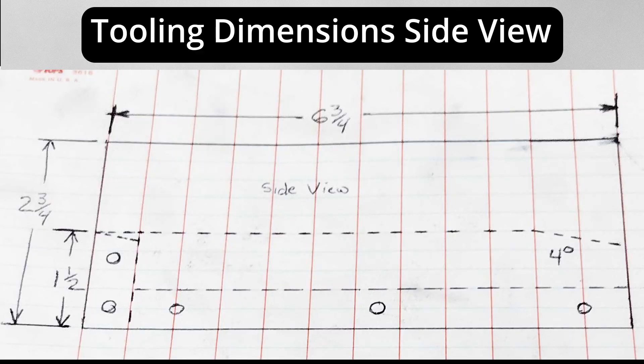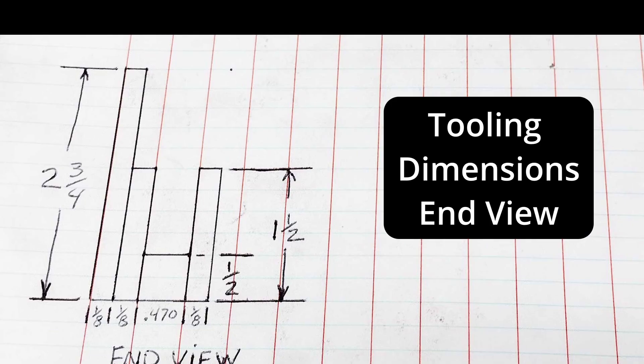Once you determine the desired orientation of the part when it discharges from the bowl, chart out the dimensions of the tooling before proceeding to fabrication.